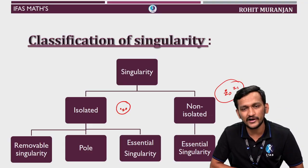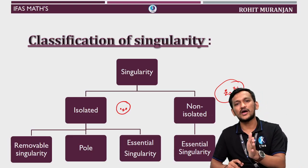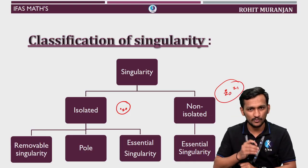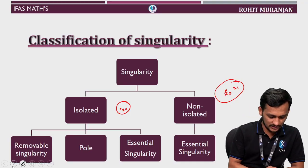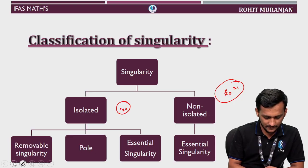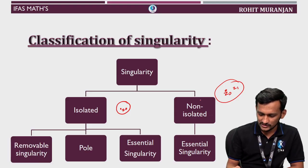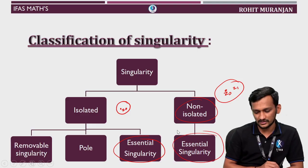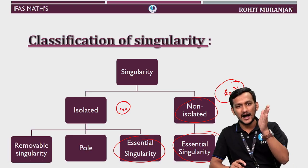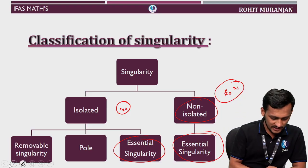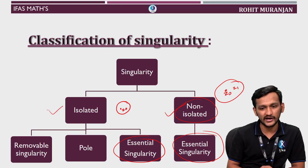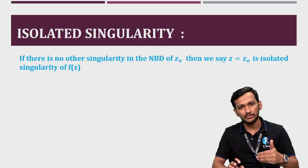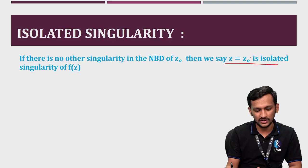Isolated singularity is further classified into three categories, namely: removable, pole, and essential. A question arises — how can one identify whether it is removable, whether it is a pole, or whether it is essential? There is some test to check whether these singularities are removable, pole, or essential. Non-isolated is further classified into essential as well. So essential appears in both isolated and non-isolated. We will see later how one can distinguish whether it is an isolated essential or non-isolated essential.